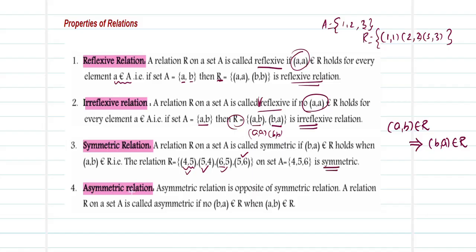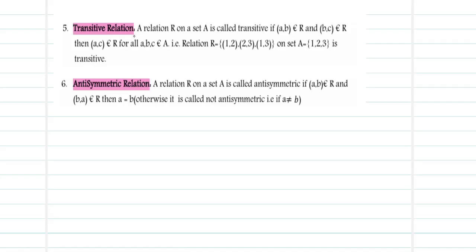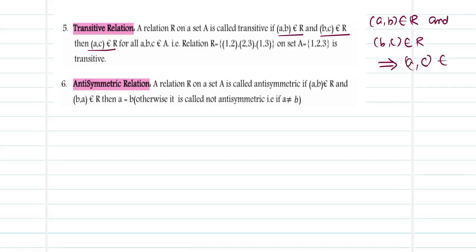Asymmetric relation is the opposite of symmetric relation. If it contains no (B, A) when (A, B) is there, then you call it an asymmetric relation. Next, transitive relation. A relation R on a set A is transitive if (A, B) belonging to R and (B, C) belonging to R implies (A, C) belongs to R. It is like a triad: A to B, then B to C, then I can go from the ordered pair (A, C).